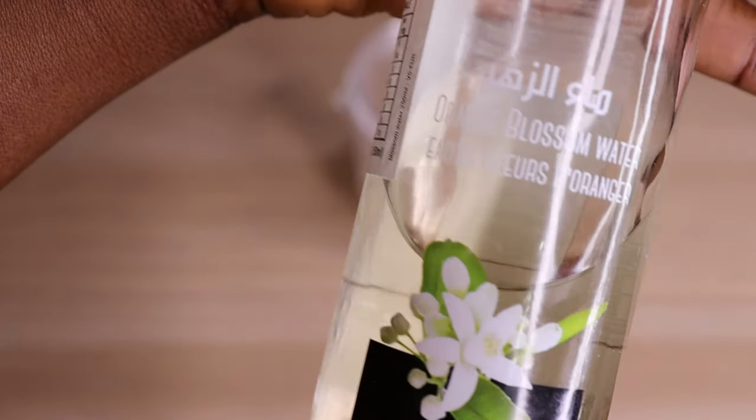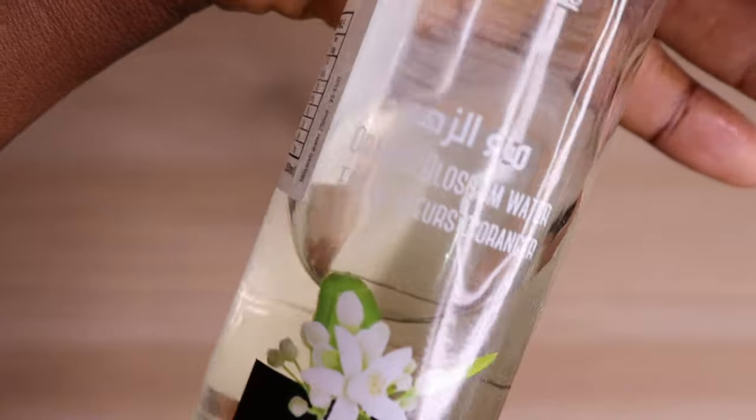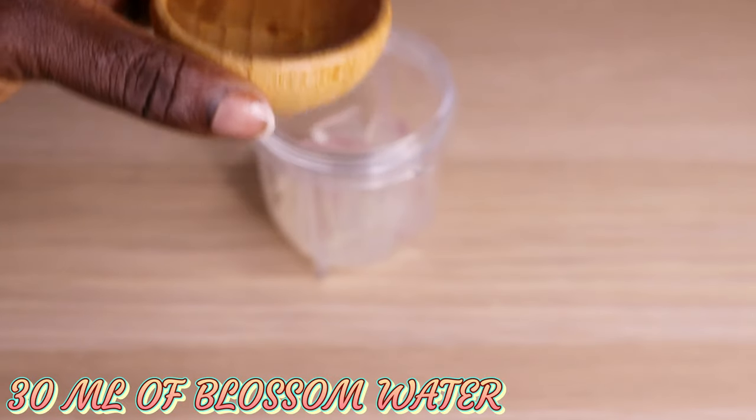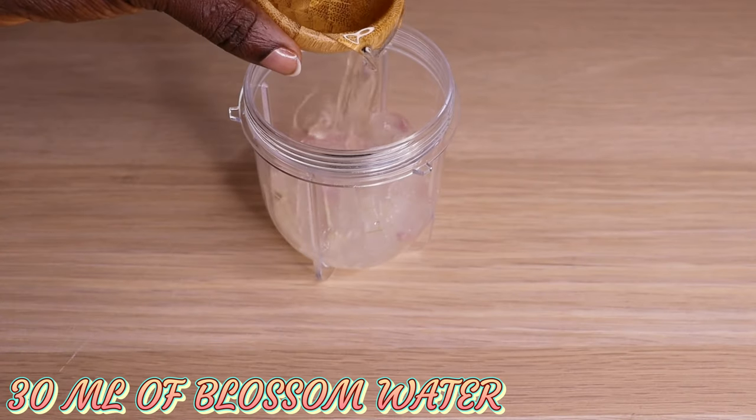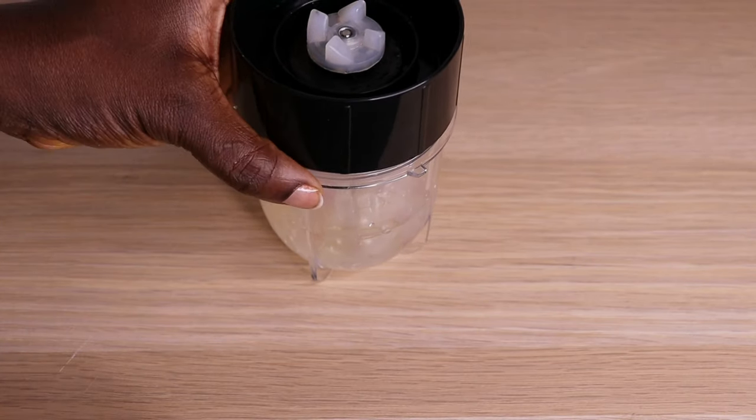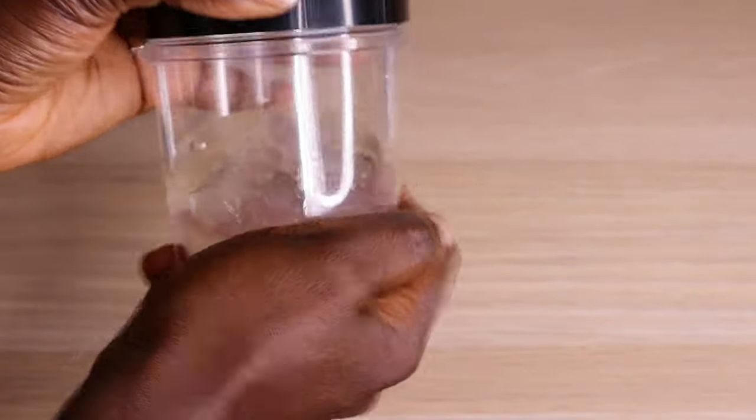Over here I have my orange blossom water. I will use 30 ml of my orange blossom water. This water is amazing on the skin—it exfoliates your skin, smooths your skin, and gives your skin glow. You can use rose water as well if you don't have this water. The link of all the items I'm using I'm going to link down below in case you want to purchase them.